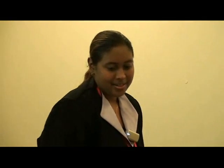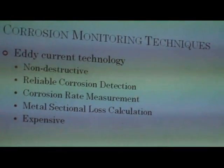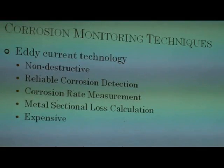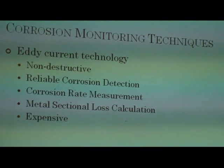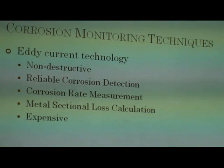Another test involves the use of eddy current technology. Key points about this method: it is non-destructive with no need for direct connection to exposed steel rebar; it is a reliable corrosion detection method that actually measures the corrosion current, confirming whether corrosion is taking place; and it has the ability to determine the sectional loss of metal as a result of corrosion, so it can quantitatively measure corrosion. The drawback is that it can be expensive.